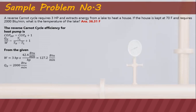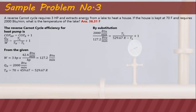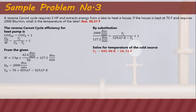Substituting into the formula: 2000 over 127.2 equals TL over (TH minus TL) plus 1. There is only one unknown, TL. Using algebraic manipulation, TL equals 495.98 Rankine. The result is in Rankine because the temperatures used were in Rankine.